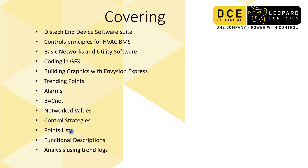We're going to look at points lists — the list of points, the inputs and outputs to the controllers. We're going to touch on functional descriptions and who writes these and where you should get your information for creating your control code. And then finally, some analysis using the trend log data that we previously set up.